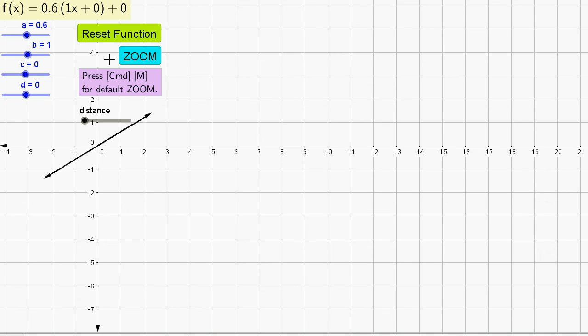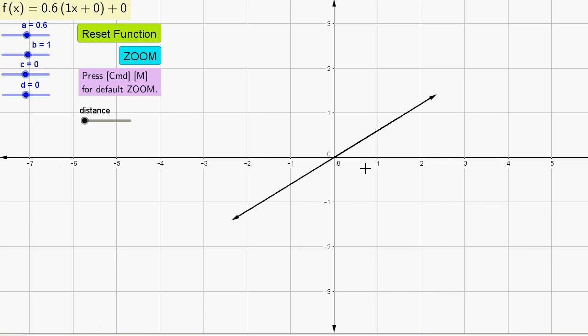When you press Ctrl M, the zoom looks like this. This is basically the default. I'm not sure why they have the origin towards the left instead of in the middle, but that's okay. I have a custom zoom that has it pretty much center. That's one thing to note.